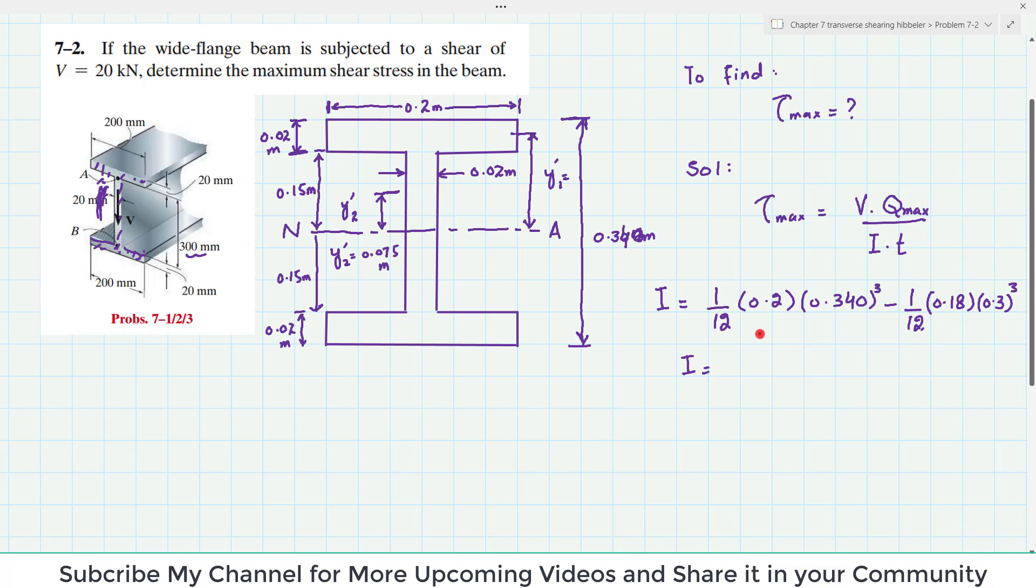So I have applied in this problem, I have applied this method. So when you calculate it you will get the moment of inertia of whole section is 0.250 into 10 to the power minus 3 meter 4.